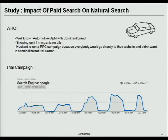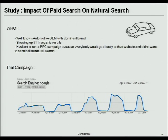The final example is a white-labeled account — a very well-known OEM automobile manufacturer. They showed up number one in all organic results, and our sales team said they should buy keywords to drive more people to their dealerships. They were hesitant, so we put together a test where we would pulse paid campaigns on and off to see what impact it has on the market — using different intensities of spend as well.